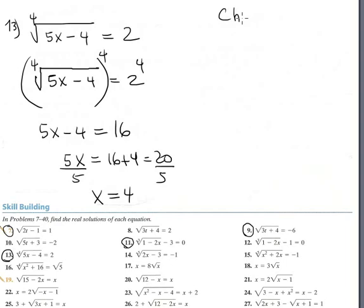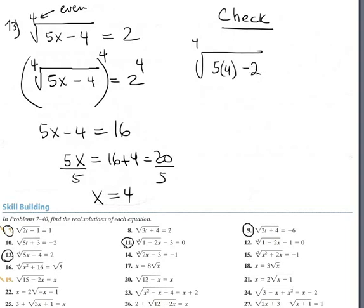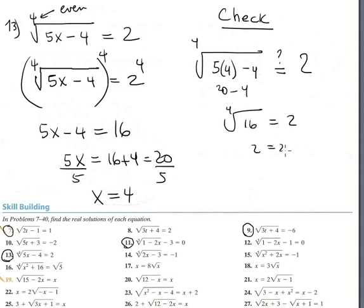Mandatory checking since the index is even: the 4th root of (5 times 4 minus 4) should equal 2. That's the 4th root of (20 minus 4), which is the 4th root of 16. The 4th root of 16 is 2, and 2 equals 2 — it's true. The answer x equals 4 is correct.